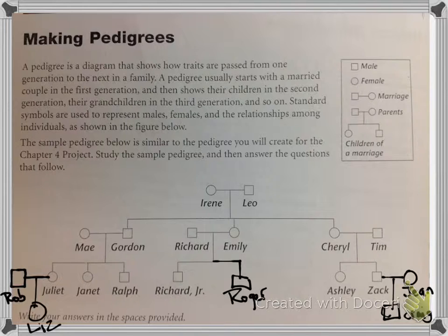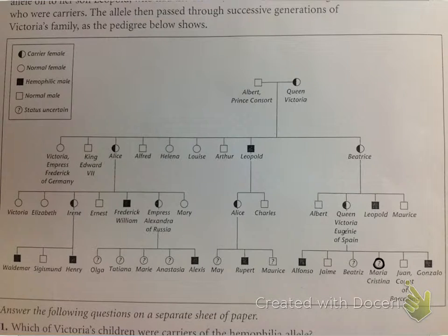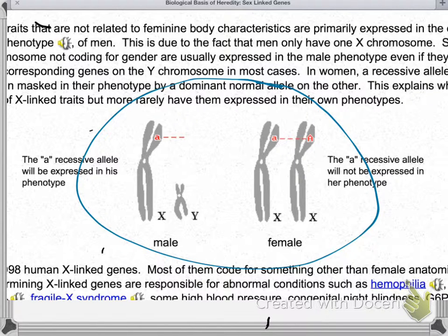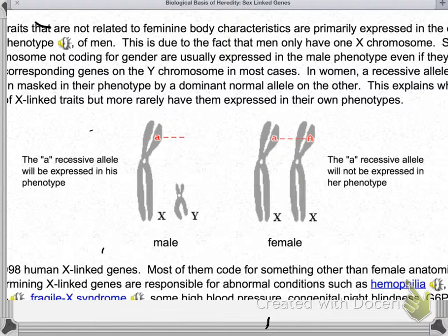Now we're going to look at how genetics are passed along. In your packet it talks about sex-linked traits on the very next page. I'm going to skip over a couple slides and get to this here — this is not in your packet, but I think this is the simplest way to explain it. So all we're really looking at is the diagram in the middle with your male and female chromosomes. If you remember when we did the face traits packet, we talked about males having the XY chromosome and females having XX. And if you look at the picture, you'll notice that the male Y chromosome is actually physically smaller than the X chromosome.